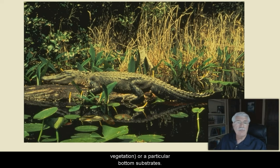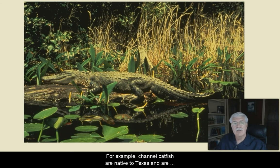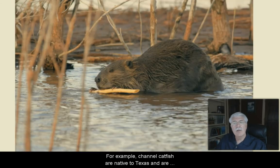Channel catfish, for example, are native to Texas and are well adapted to Texas's warm climate and aquatic habitats.